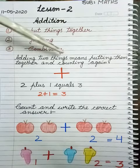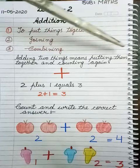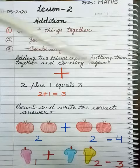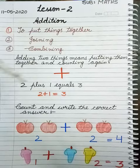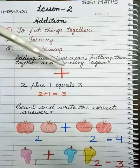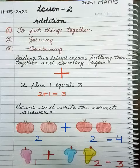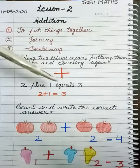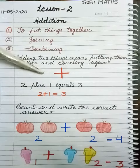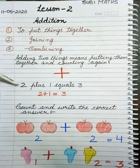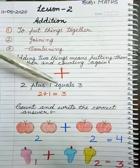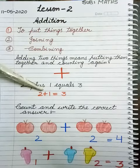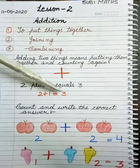Adding two things means putting them together and counting again. Now see this symbol. The symbol of addition is plus. You read it as plus. See 2 plus 1 equals 3.